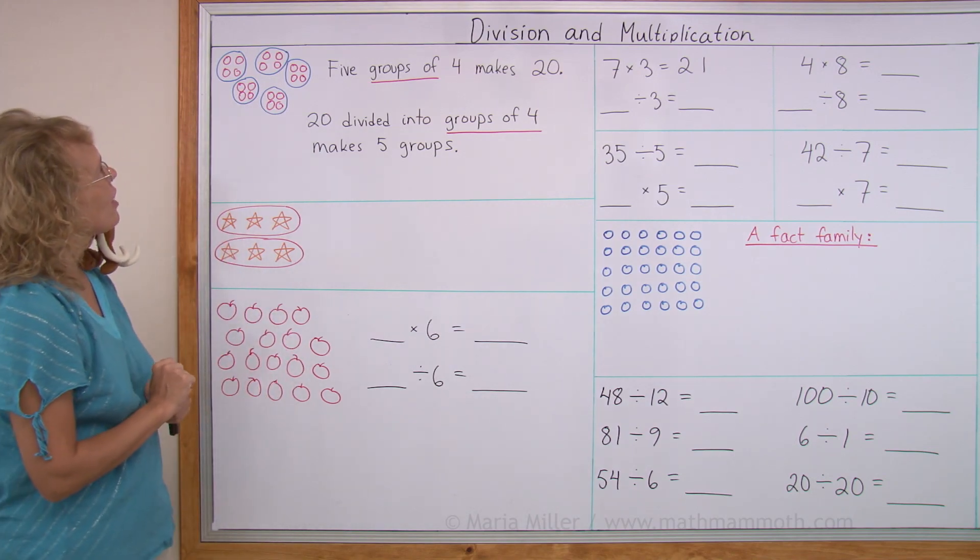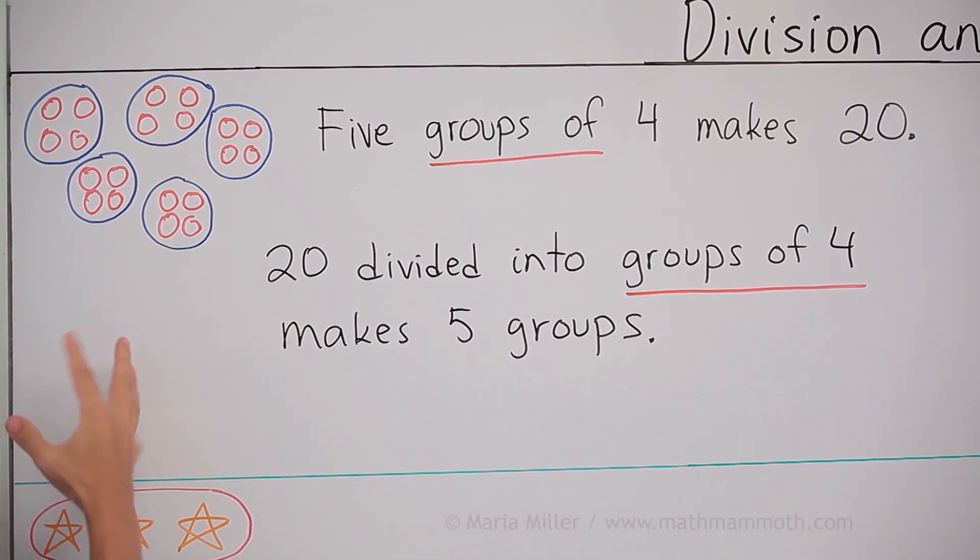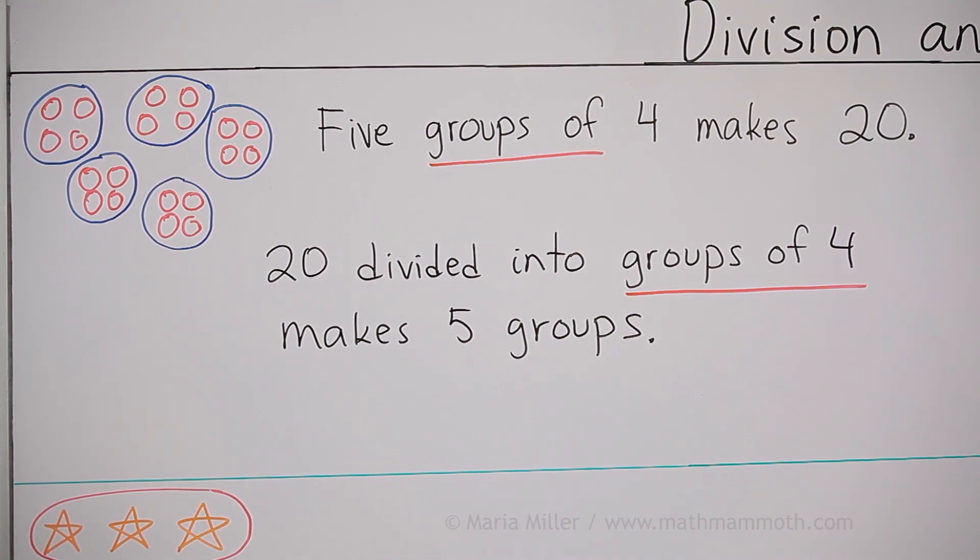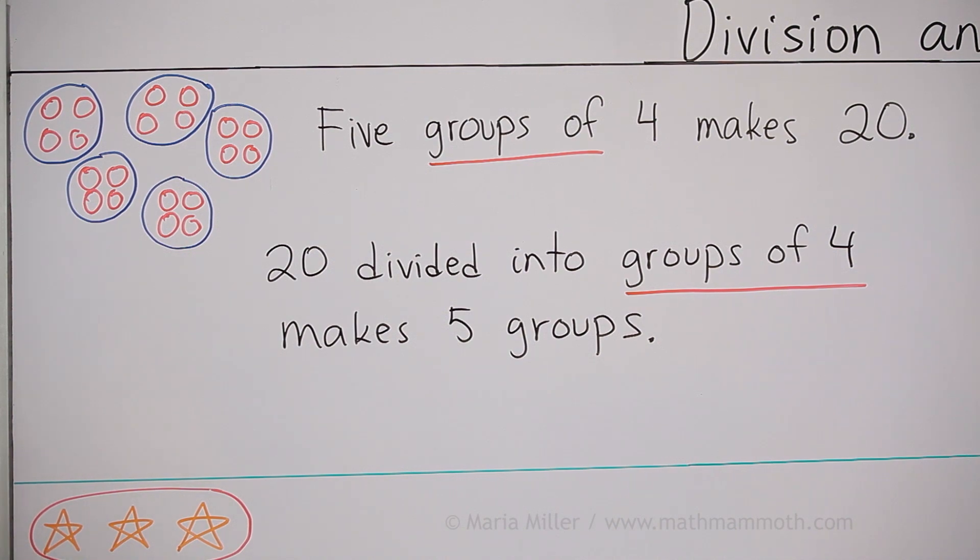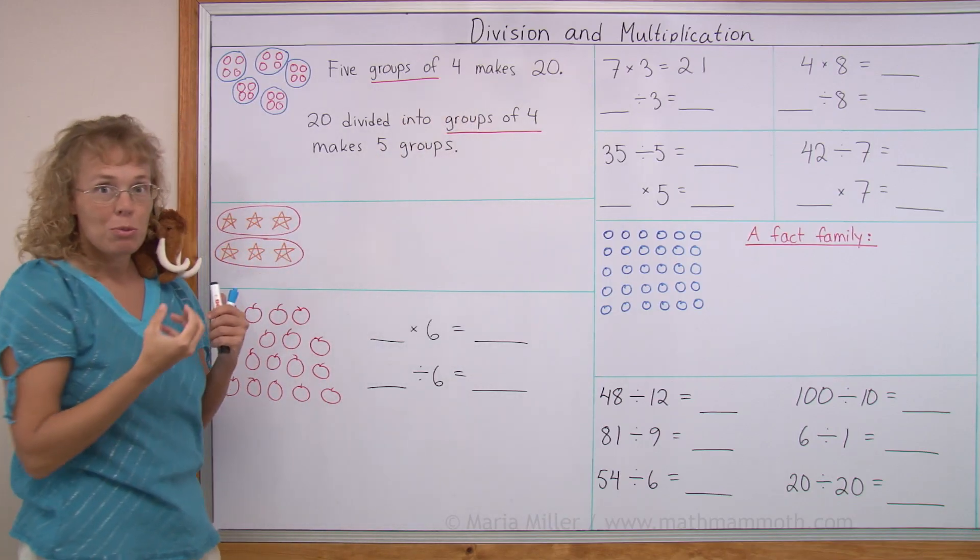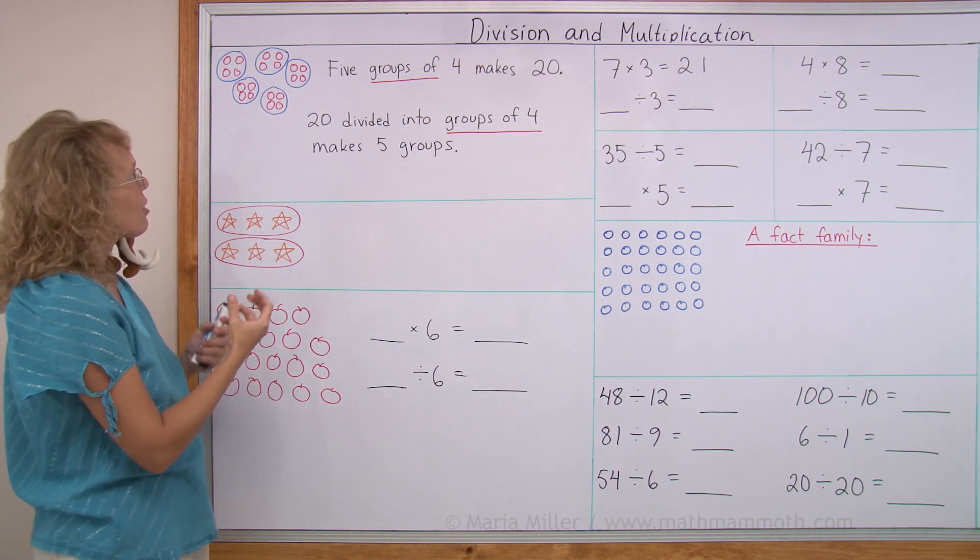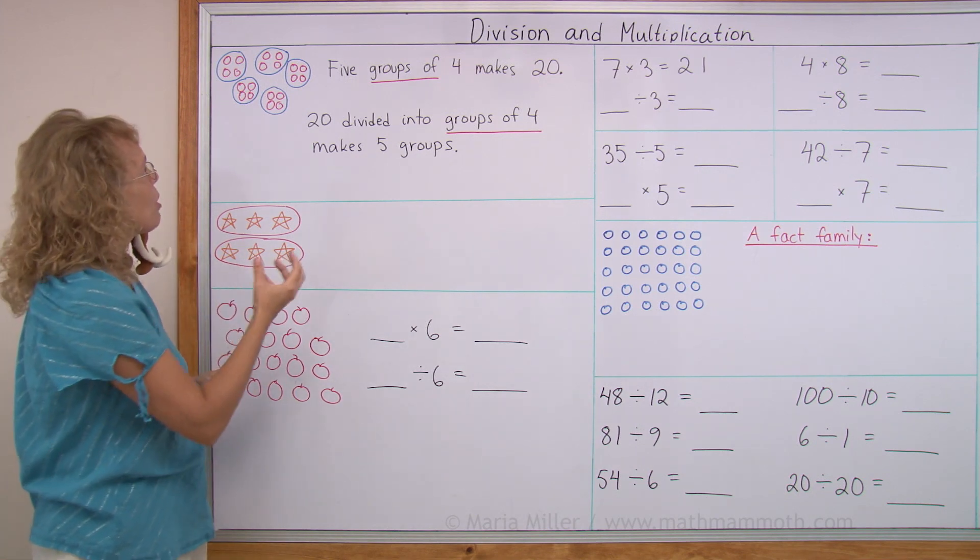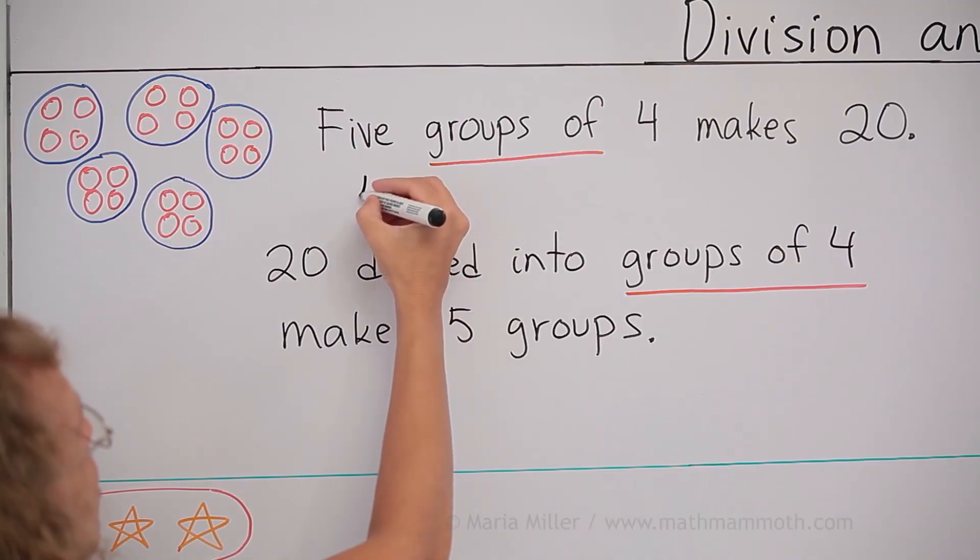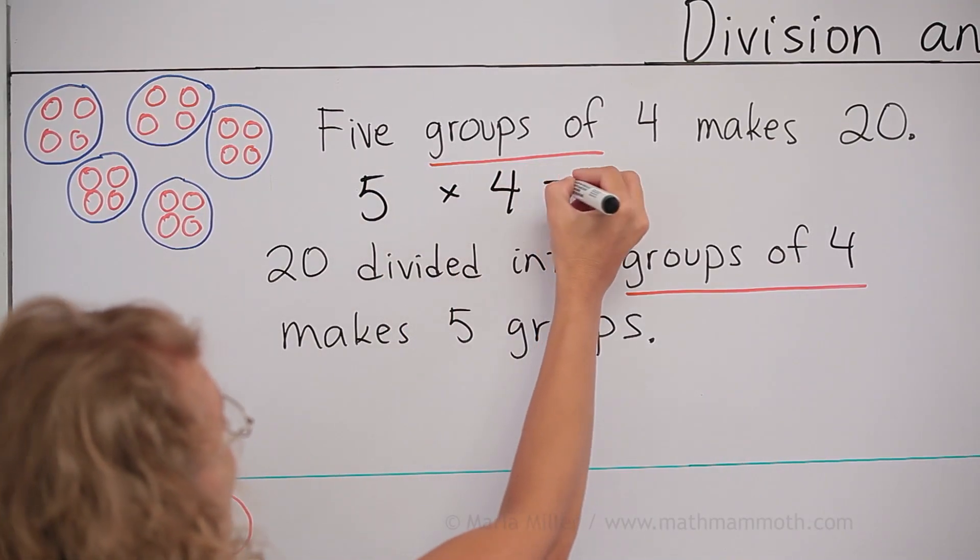Let's look at this example here. I drew some berries and there are five groups with four berries in each group. So we have five groups of four and that makes 20 berries in total. We can write a multiplication when we have the same amount in each group. I write five times four equals 20.